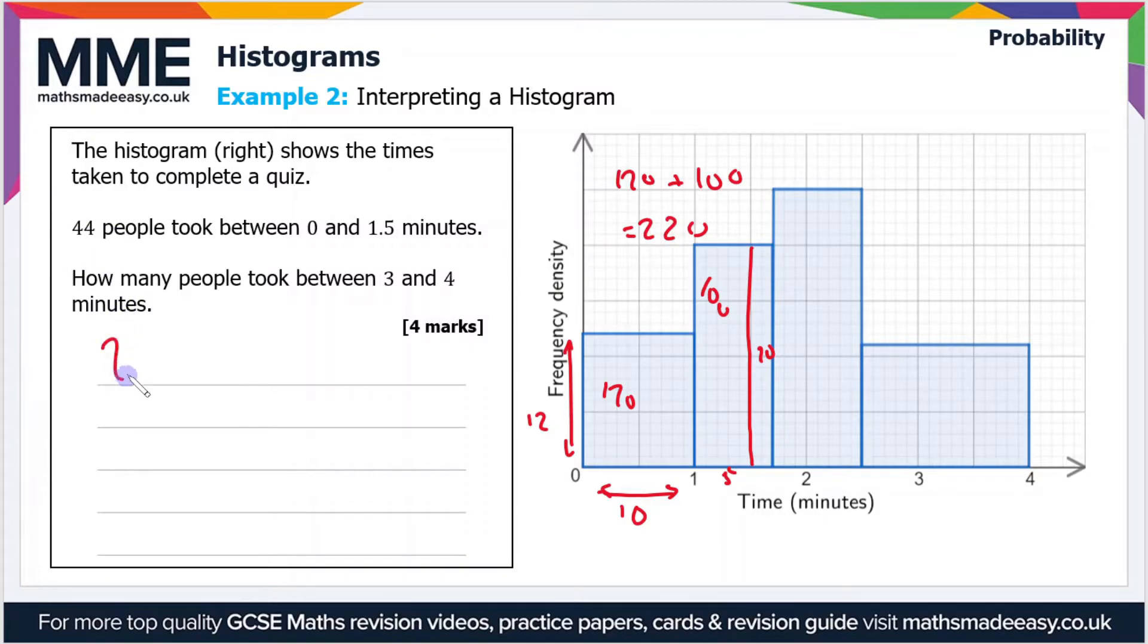So 220 squares equals 44 people. So therefore we need to divide 220 by 44 to find out how many squares is represented by one person.